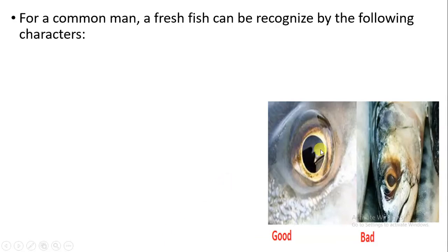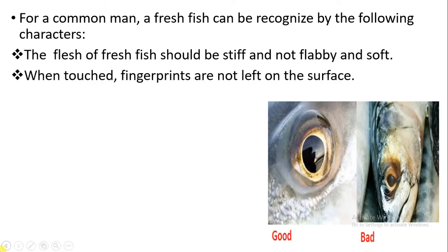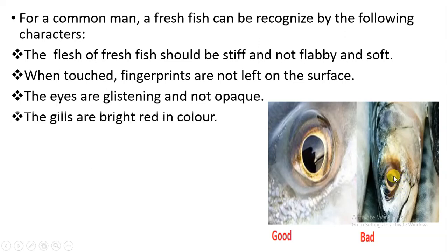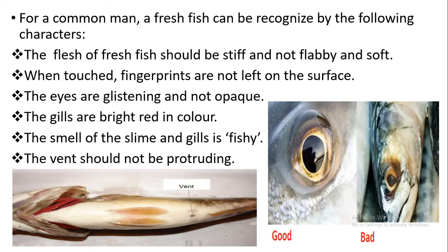There are some characters by which a common man is able to identify fresh fish versus spoiled fish. Fresh fish is always stiff and hard — it is not flabby or soft. When touched, there are no fingerprints seen on the surface. The eyes of fresh fish will be glistening, while the eyes of spoiled fish will be opaque. The gills are bright red in color, not pink, and the smell of the slime and gills is fishy. The belly region should not be protruding or bulgy. If these characters are absent, then the fish is likely spoiled.